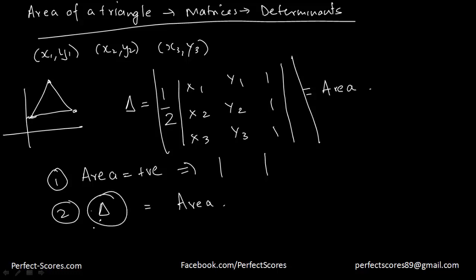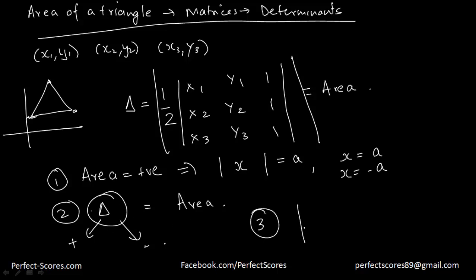Second: if you're given the value of the area and supposed to find the determinant, you should consider both the positive and negative values of the determinant — because if modulus of x equals a, then x can equal a or negative a. Third: the area of three collinear points is zero, because collinear points do not form any triangle.